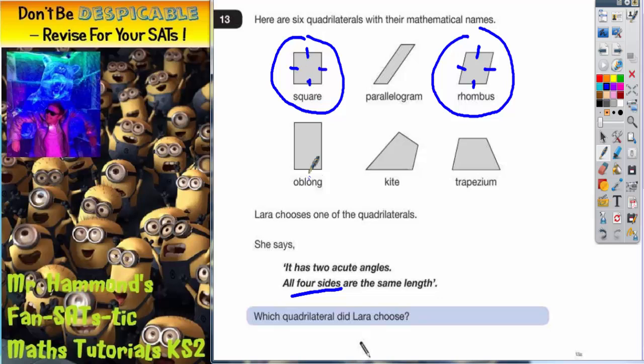However the angles are different. In a square all the angles are right angles. Now if they're all right angles they're all 90 degrees and acute means less than 90. So a square does not have any angles less than 90 because they all are 90.